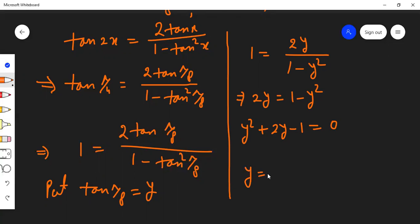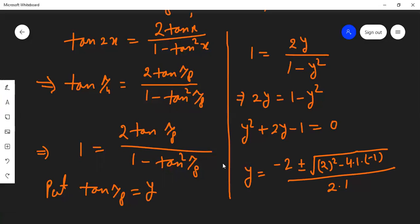Using the quadratic formula, y equals -b plus or minus square root of b² - 4ac, all divided by 2a. With b = 2, a = 1, and c = -1, this gives y = (-2 ± √(4 + 4))/2.